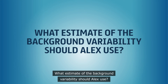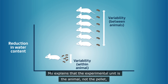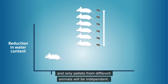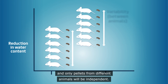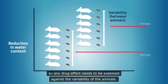What estimate of the background variability should Alex use? Mo explains that the experimental unit is the animal, not the pellet, and only pellets from different animals will be independent. It is the animal that independently receives the treatment, so any drug effect needs to be assessed against the variability of the animals.